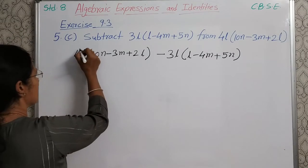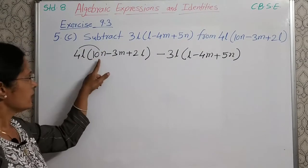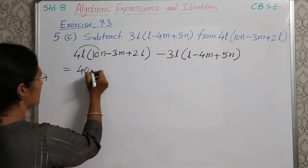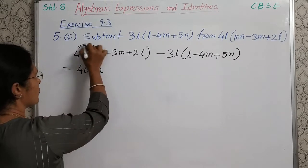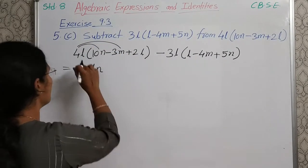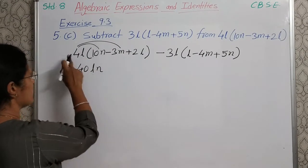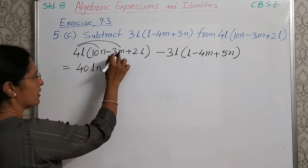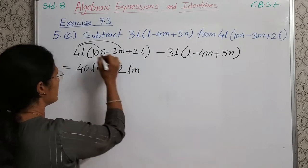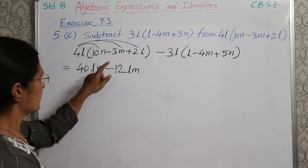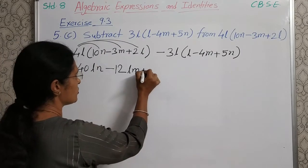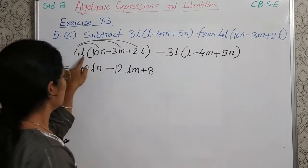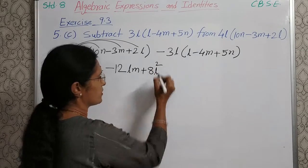First, multiply 4L into 10N: 4 into 10 is 40LN. Next 4L into minus 3M — see the sign: plus minus — minus 12LM. After that, 4L into 2L — sign is plus plus — so 4 twos are 8, L into L is L square: plus 8L square.